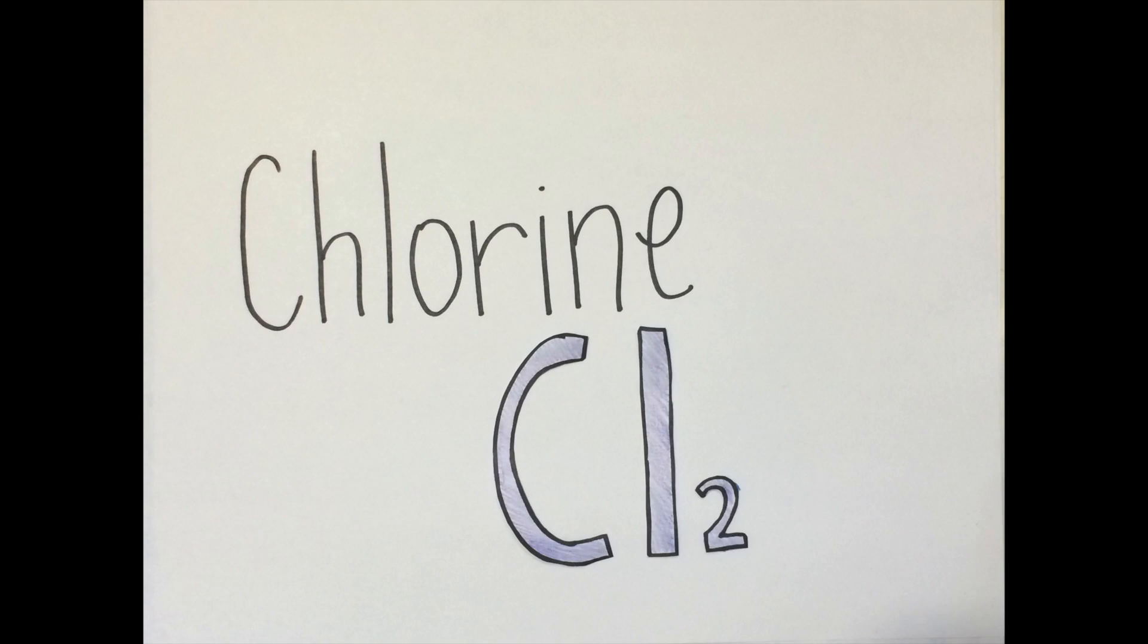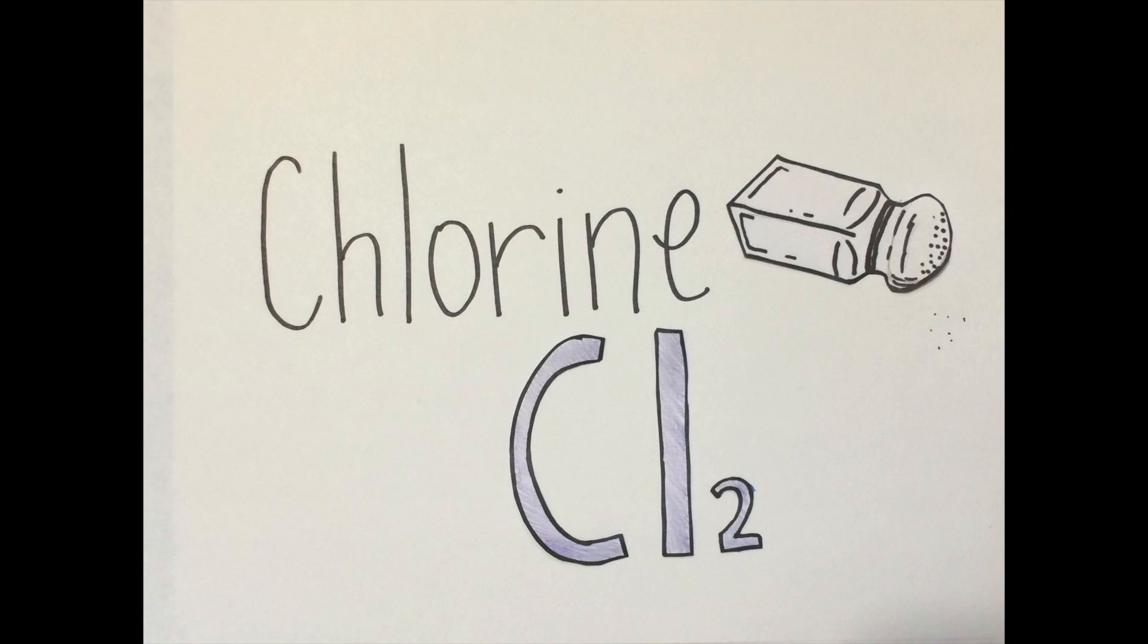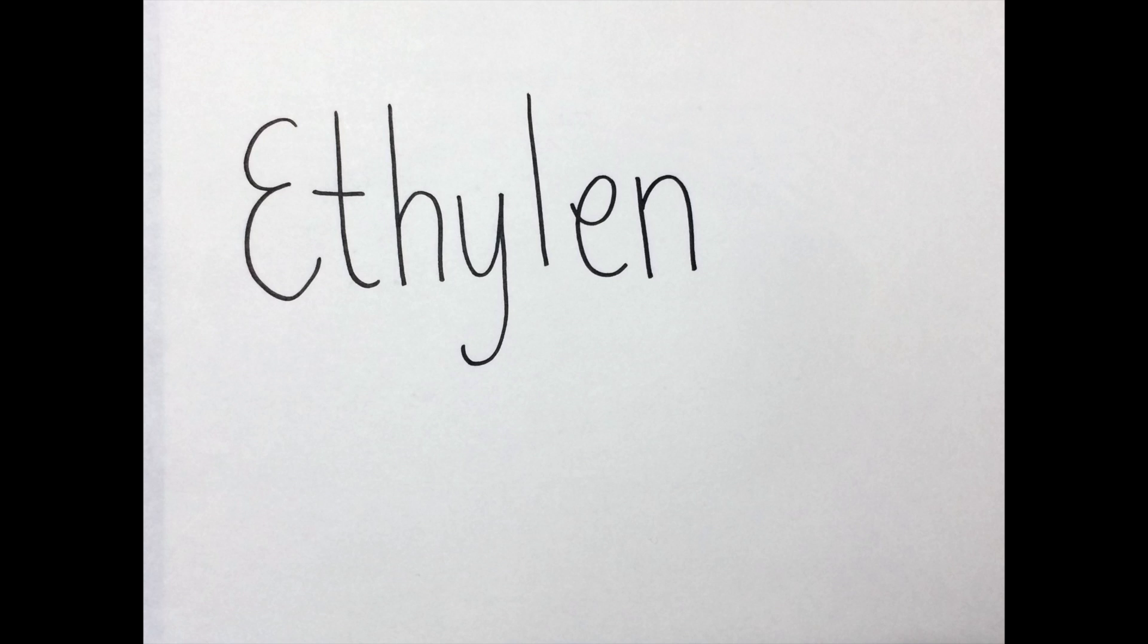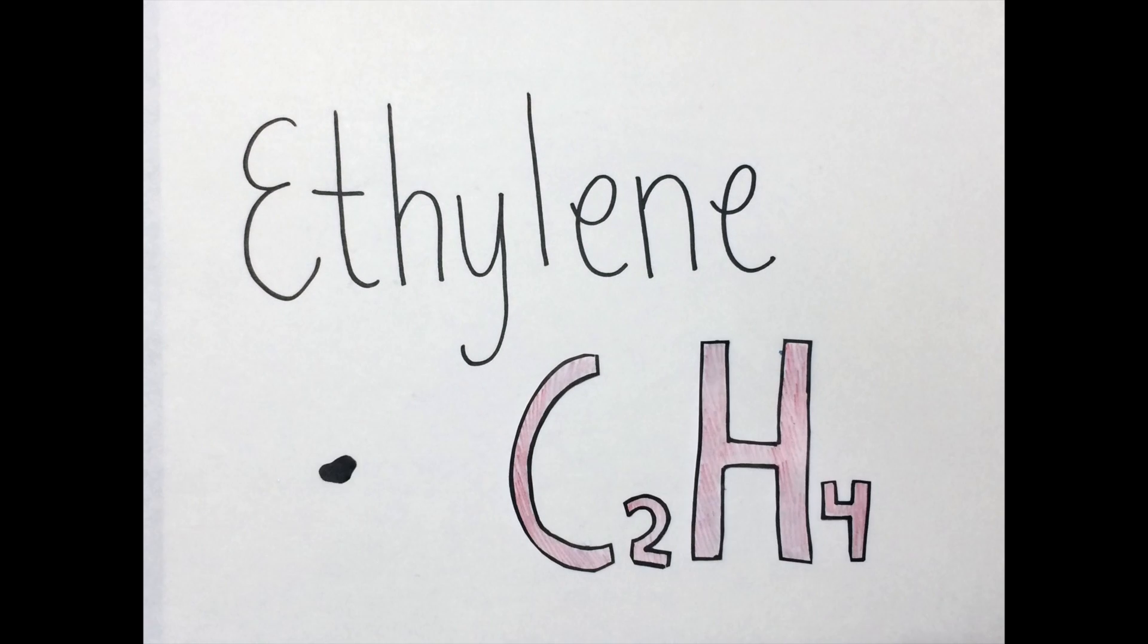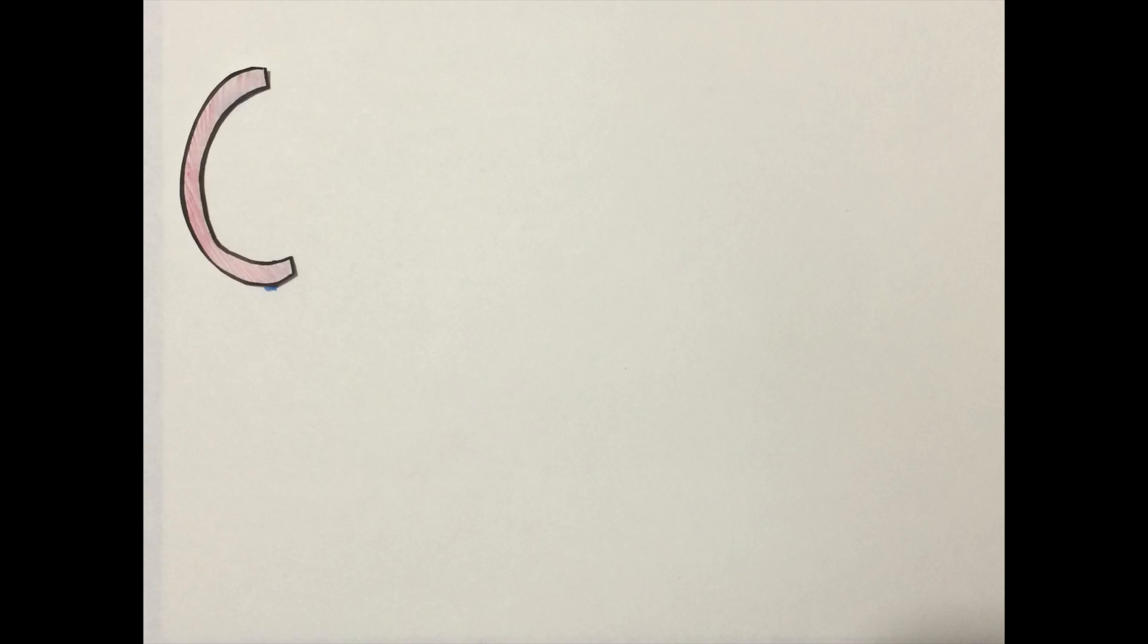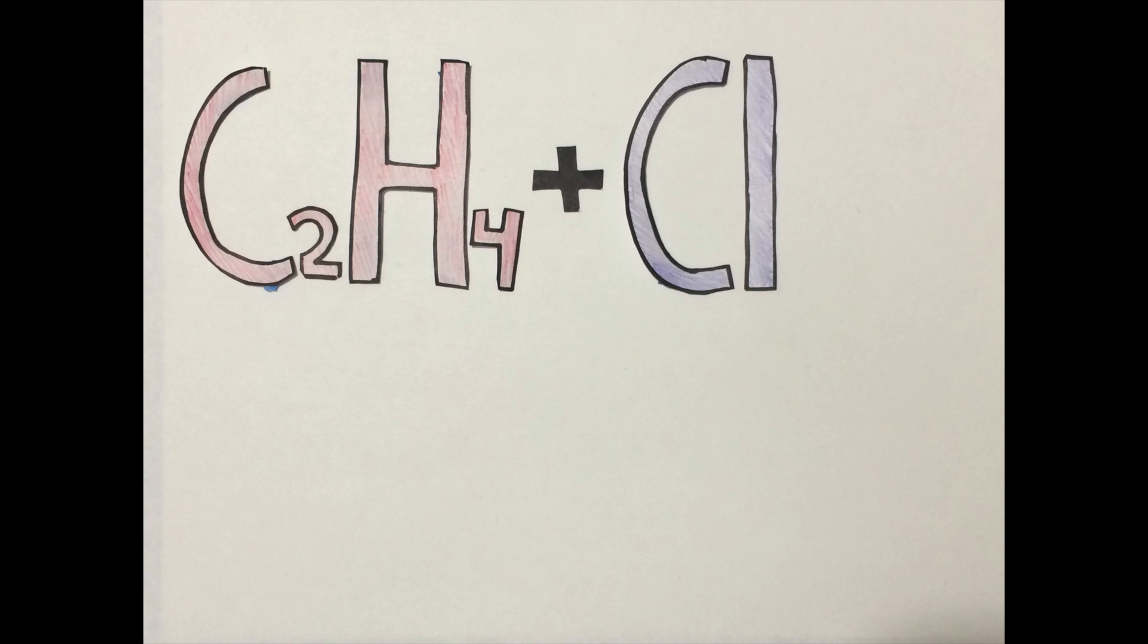Chlorine, which has a chemical formula of Cl2, can be found in your everyday table salt. Ethylene, with the chemical formula of C2H4, can be found in crude oil. When you add ethylene and chlorine together, you end up with